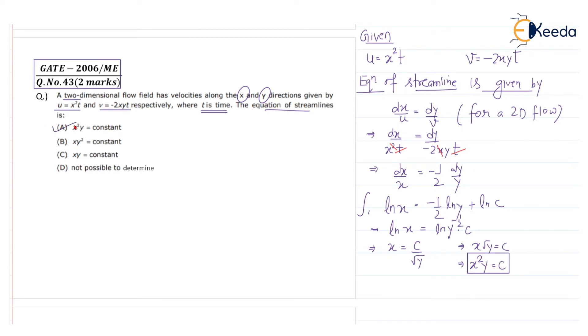This is the correct option: x squared y equals constant. So option a is the correct answer. b is wrong, x y squared; c is also wrong; d is also wrong. The correct answer is x squared y equals constant.